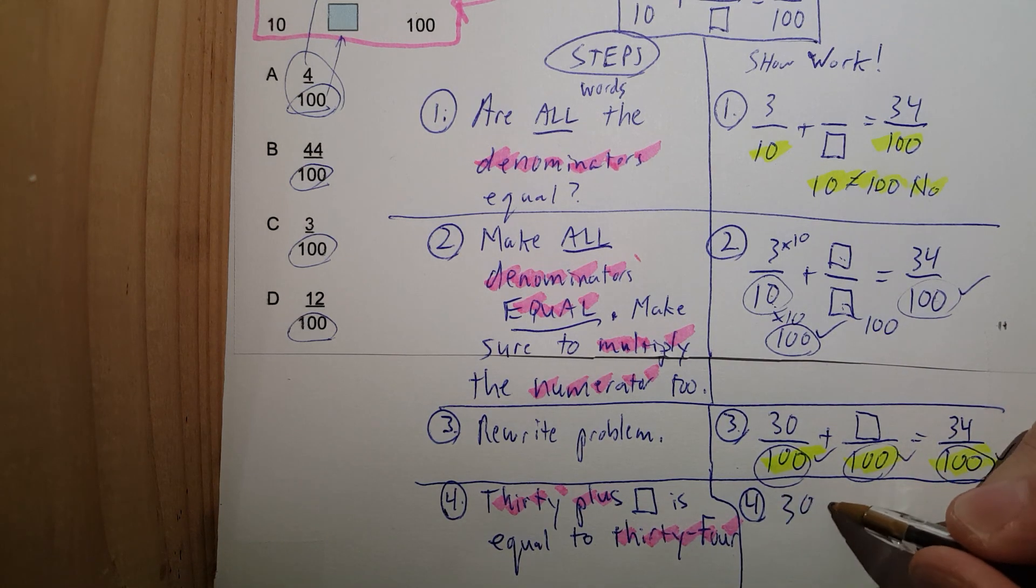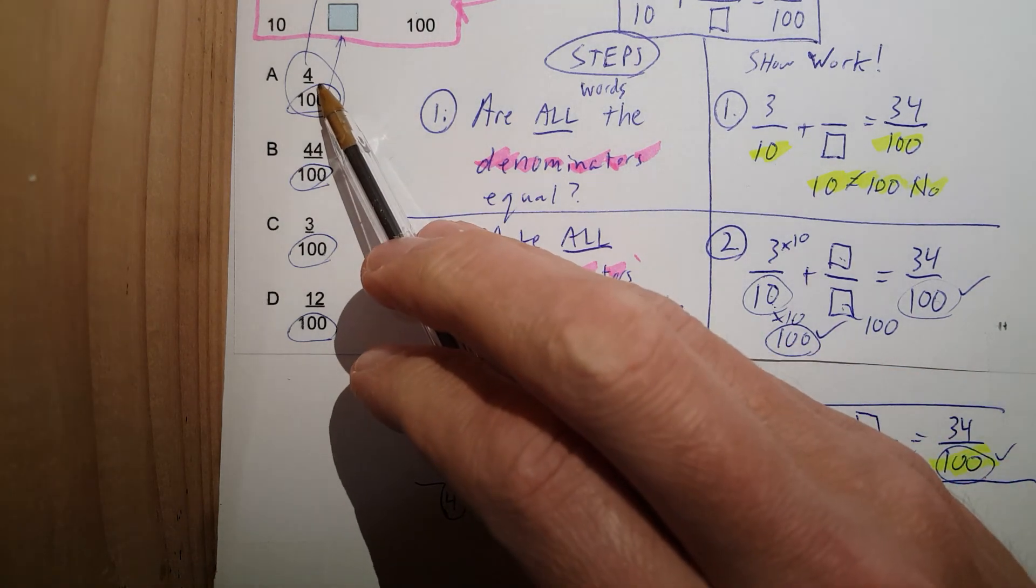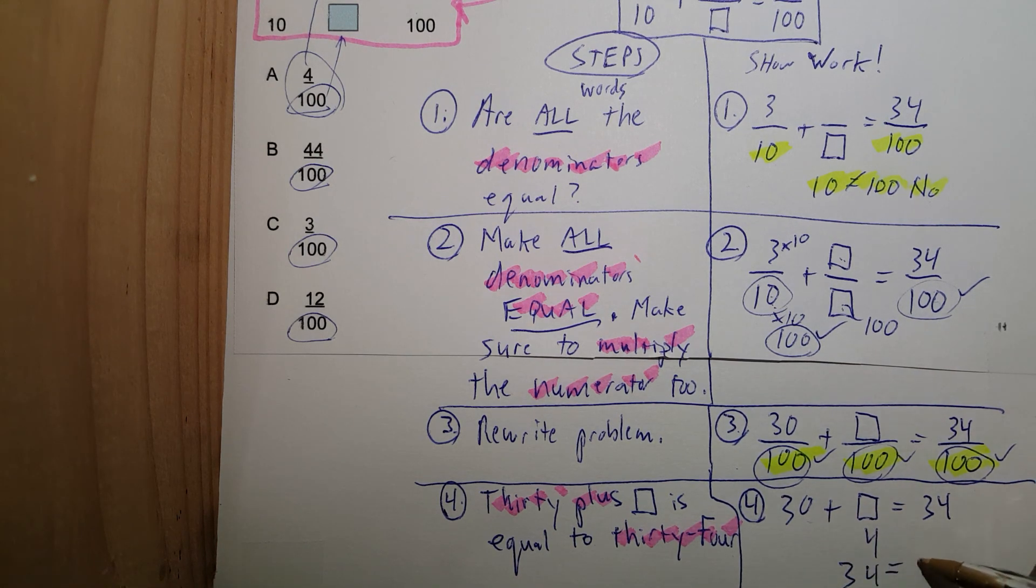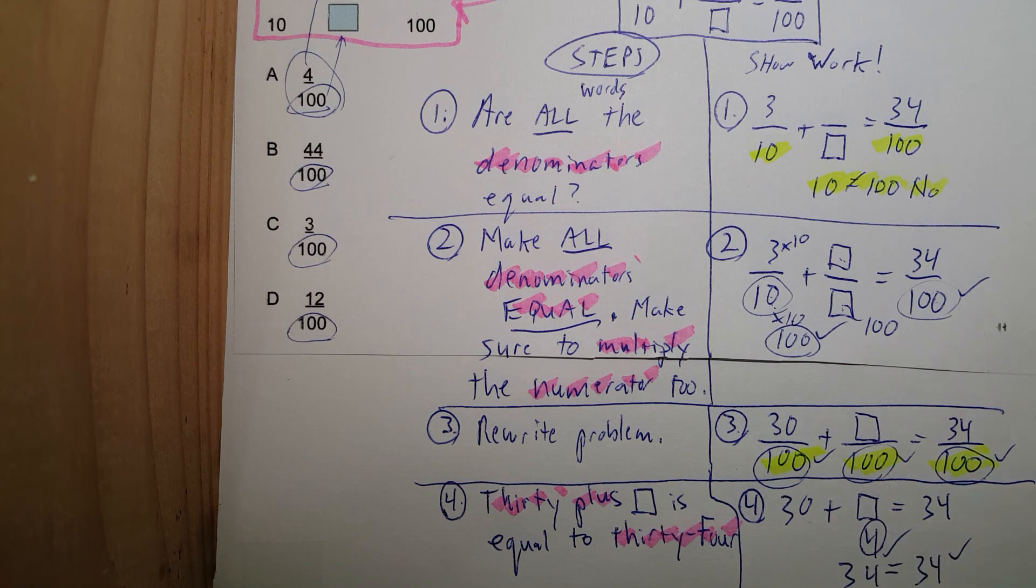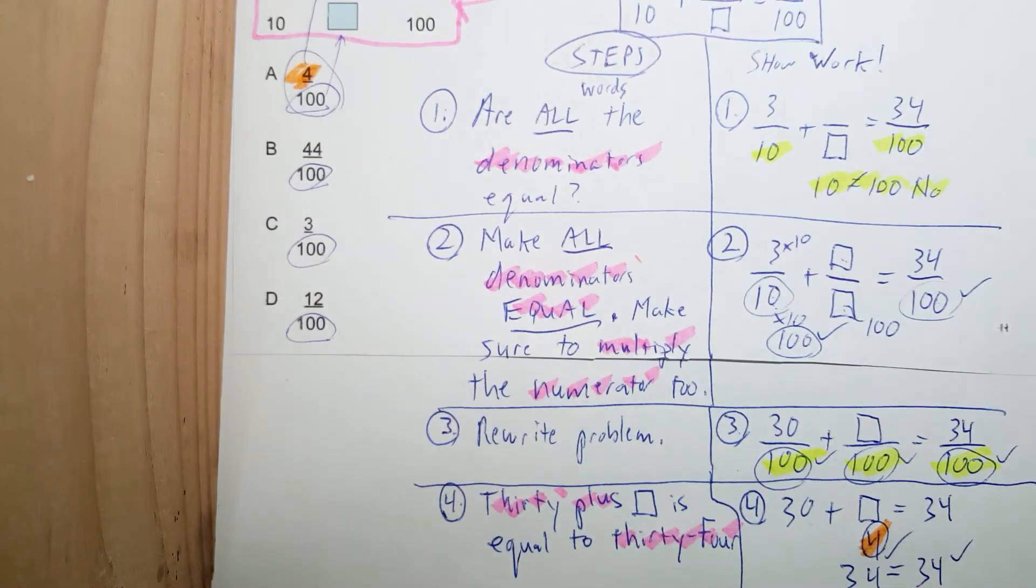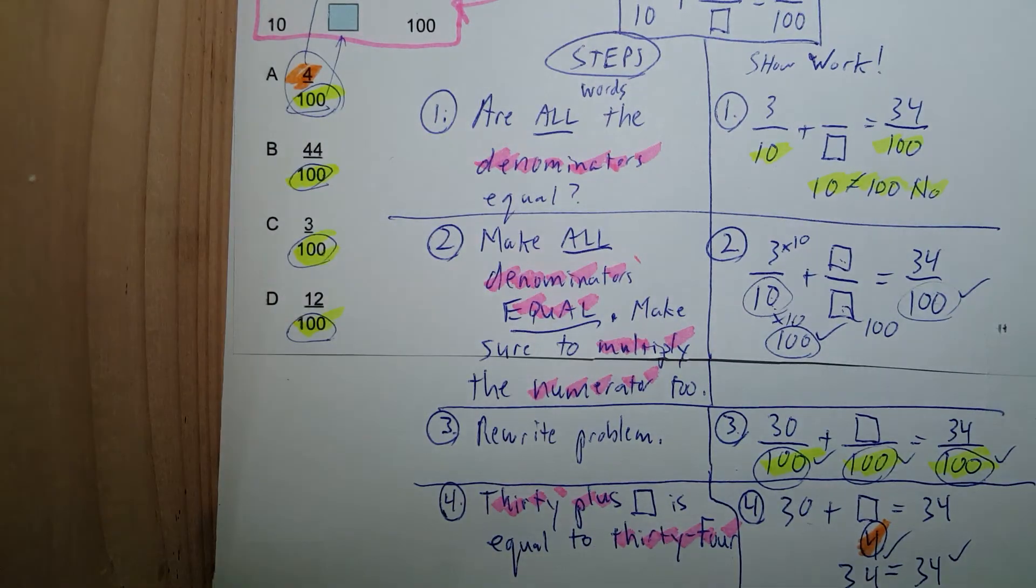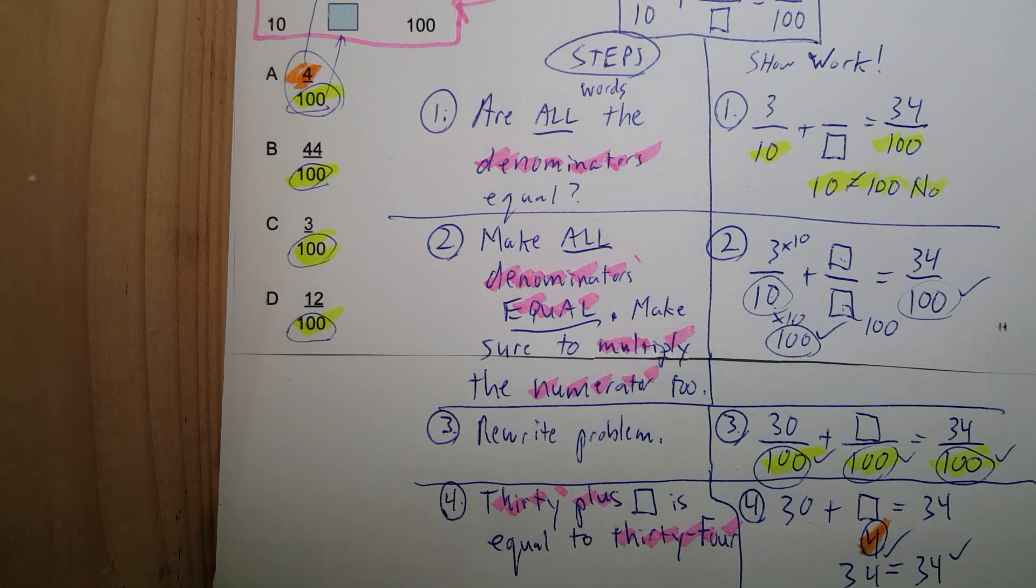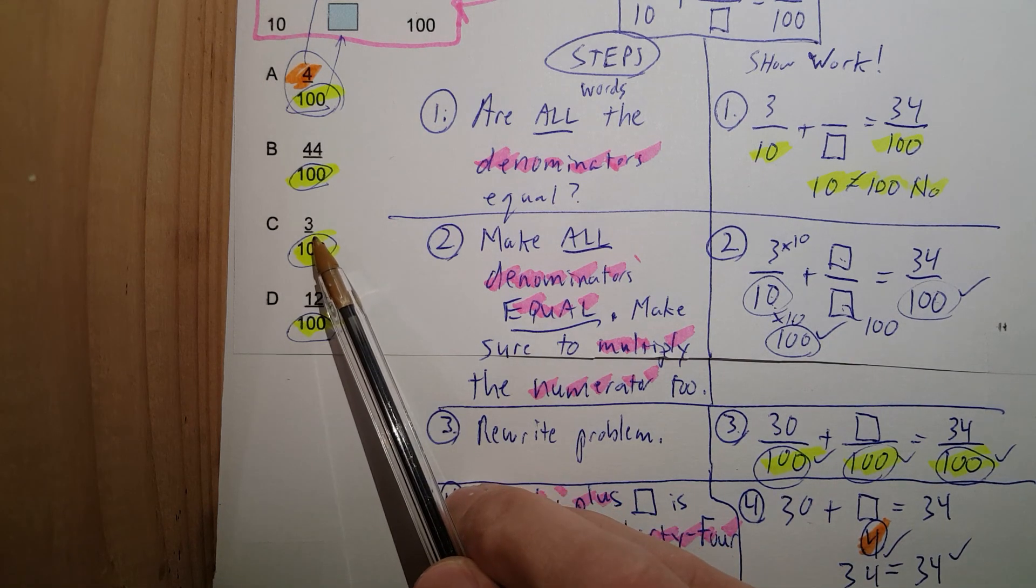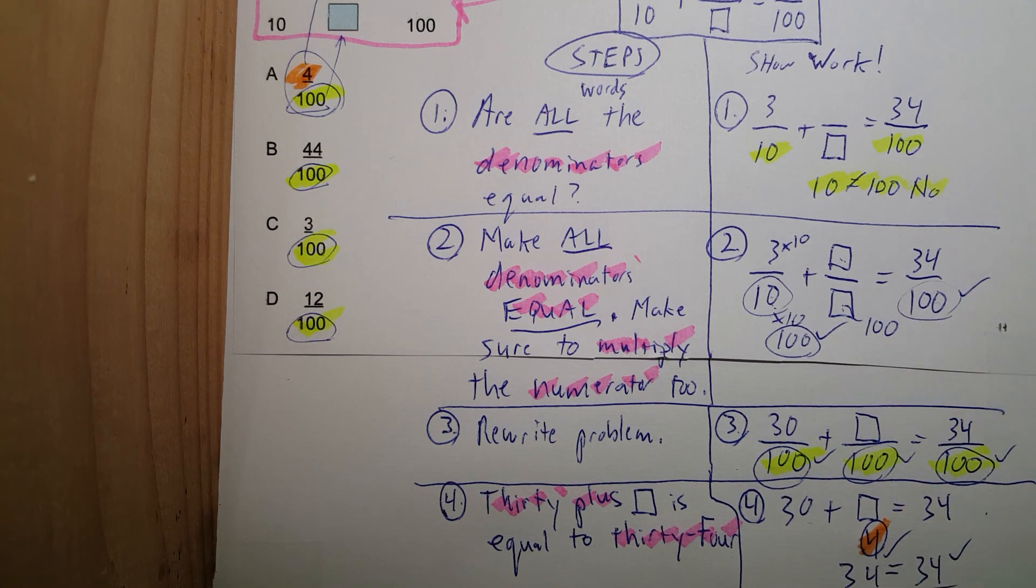So, now, 30 plus what is equal to 34? Let's just look at our choices. 4. 30 plus 4. 34 is equal to 34. Check. Check. Notice how I got that answer right there from the very first option. I just put in 4. There's 4 right there. The 100 didn't change. Notice how all the bottom numbers are 100. There it is. Done. Enough said. 44. 30 plus 44 is not 34. 30 plus 3 is super close. That would be 33. But, remember, this is math, so it needs to be exact. Done.